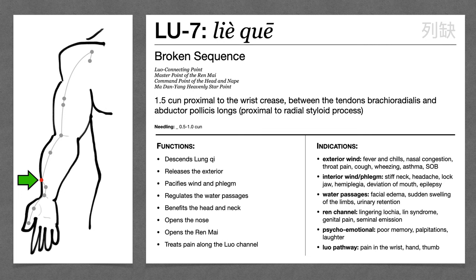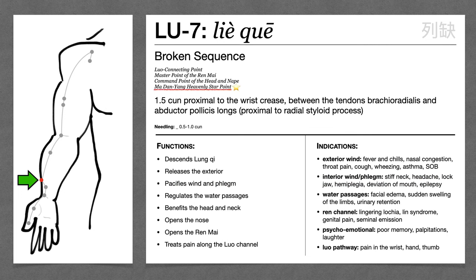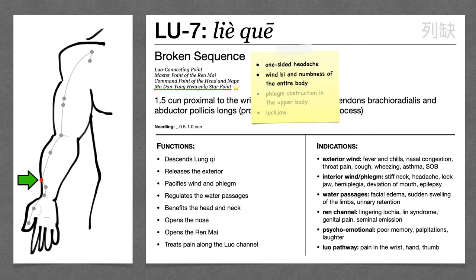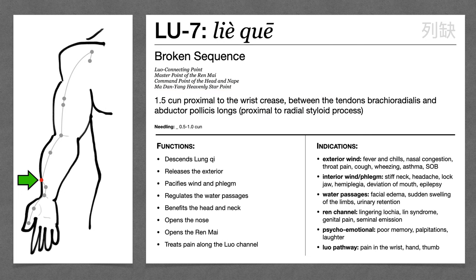If that wind cold or wind heat pathogen interferes with the lung's action of descending the fluids, we may see facial edema, sudden swelling of the limbs, or urinary retention. So Lung 7 regulates the water passages to treat those symptoms. Lung 7 also treats internal wind, especially in the head and upper body — it pacifies wind and phlegm, treating headache, facial paralysis, and epilepsy. Ma Dan Yang named it one of his 11 heavenly star points for treating one-sided headache, wind painful obstruction and numbness of the entire body, phlegm obstruction in the upper body, and lockjaw. Gao listed it as one of his four command points — the command point for the head and nape — so Lung 7 is often used for headache and stiff neck.